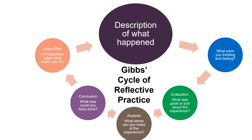The first stage of Gibbs' cycle of reflective practice is a description of what happened — this helps you set the scene. When and where did it happen? Was it in a therapy room or a community centre? Who was present in the session? What did you and the other people do? Why were you there and what was your role? And what did you want to happen as a result of the session?